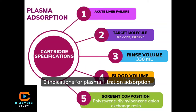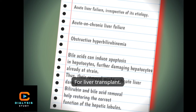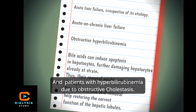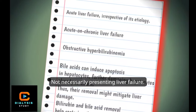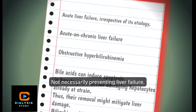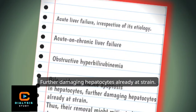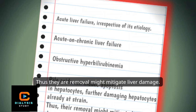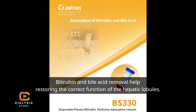Indications for plasma filtration adsorption: this treatment is indicated in patients with acute liver failure, listed or not for liver transplant, and in patients with hyperbilirubinemia due to obstructive cholestasis, not necessarily presenting liver failure. Bile acids can induce apoptosis in hepatocytes, further damaging hepatocytes already under strain. Thus, their removal might mitigate liver damage. Bilirubin and bile acid removal help restore the correct function of the hepatic lobules.